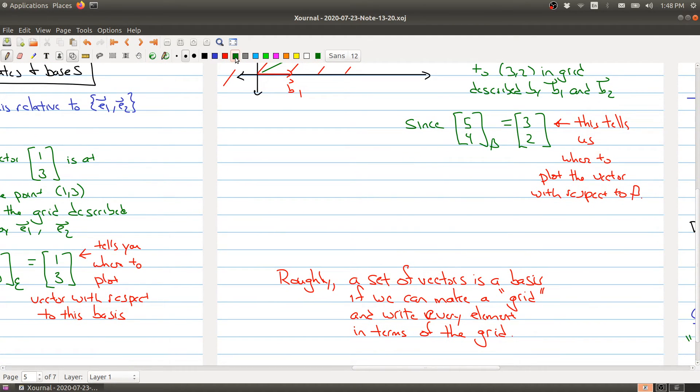So one thing I want to write here is just reiterating what I just said. So IE, the vector 5, 4 in the normal grid has endpoint at 3, 2